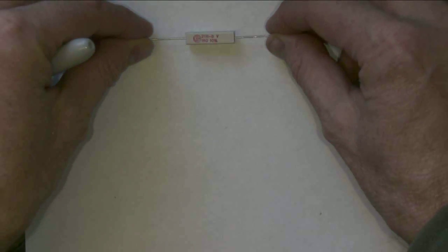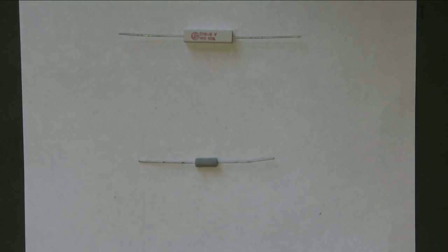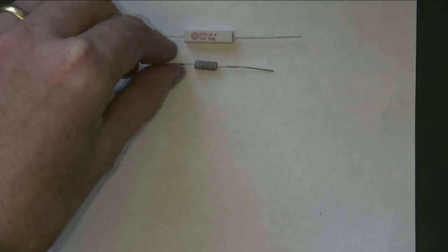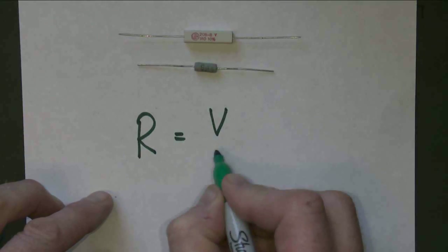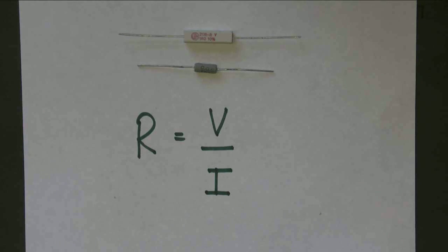This video is not an introductory video, it assumes some prior knowledge. It's going to be about resistors and this equation: R equals V divided by I. We're going to look at what that equation actually means and assume that you've met it before.